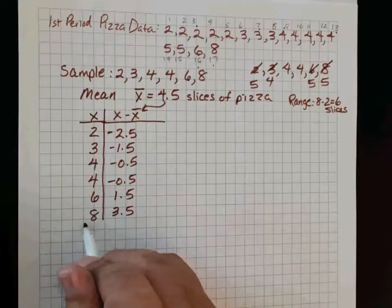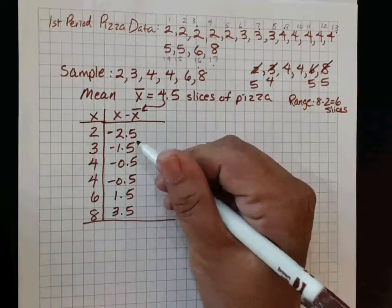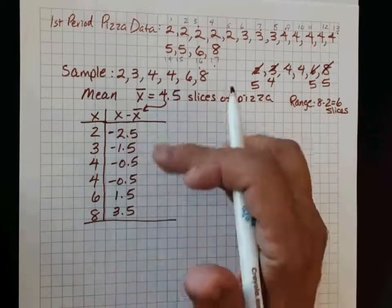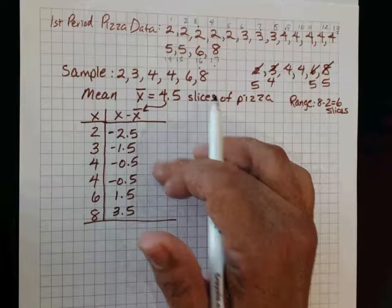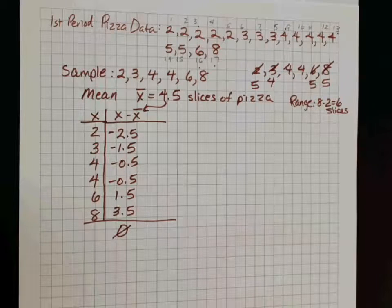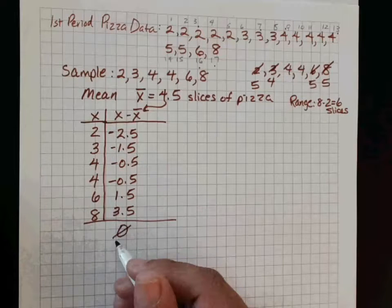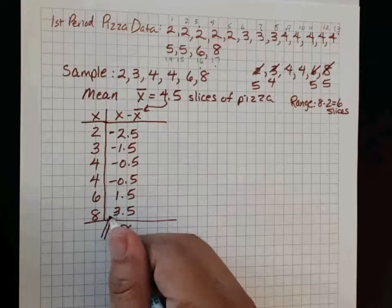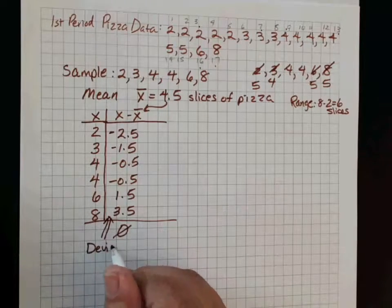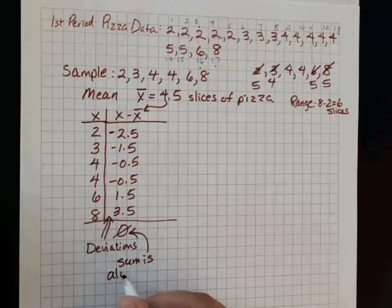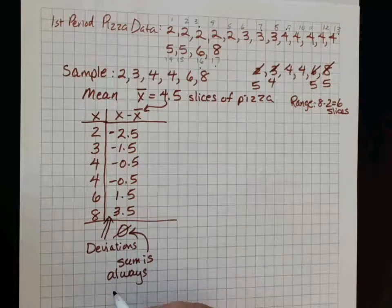Now, if you were to add all of these together — well, these two are going to cancel out, and if I add these two to that, it adds up to 0. Is 0 really a good description of spread? Not really. The problem is, if I allow them to keep their positive and negative signs, they always sum to 0. By the way, this column of numbers is called deviations. The sum of deviations is always 0, and there's an interactive app on the webpage where you can see that.